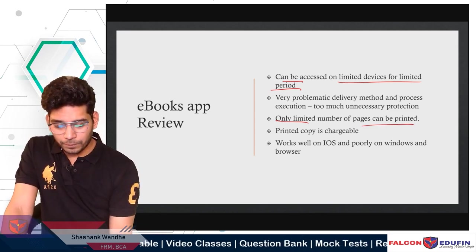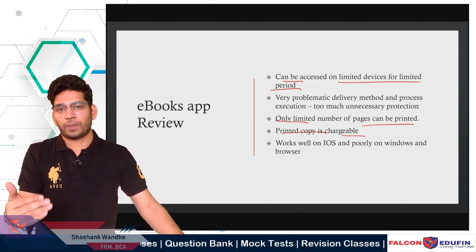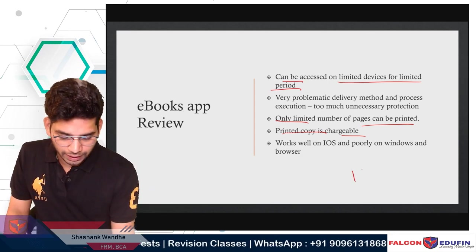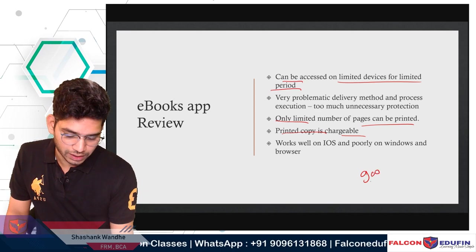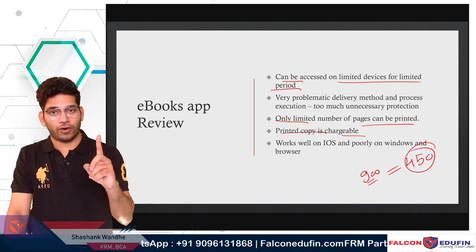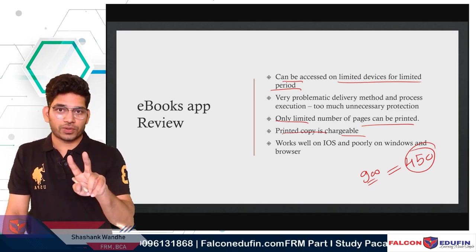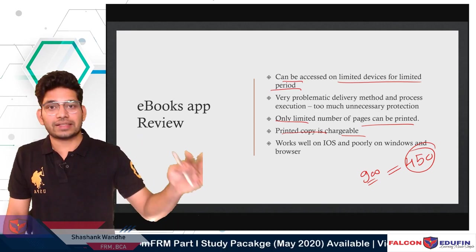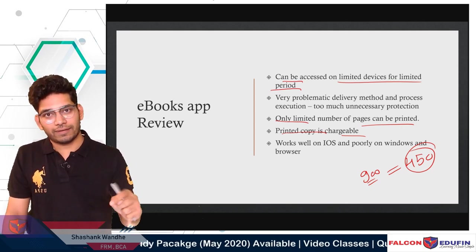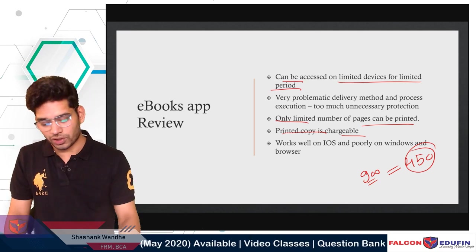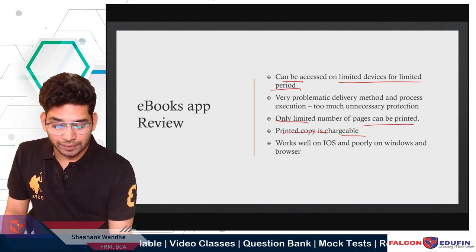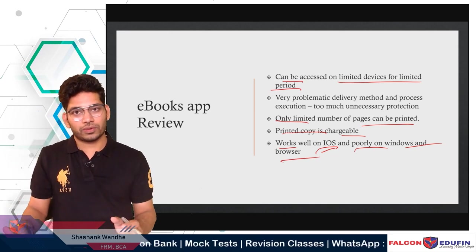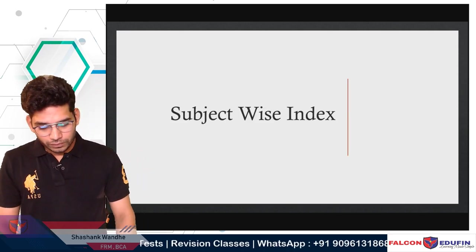Another issue: only limited pages can be printed, and printed copies are chargeable. To print 900 pages, you'd need to issue 450 print commands — two pages at a time — wasting a full day. If you want printed books, that's another $300 on top of the $75 already paid. The app works well on iOS but poorly on Windows and browser, where navigation is very difficult and the interface opens strangely.